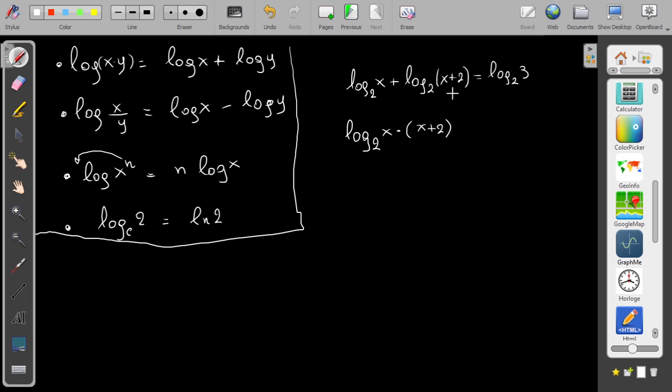x times (x+2) equals log₂3. So basically here now, I have log₂ equal with another log₂. Since these two are equal, then the function inside, which is here x times x, should be equal with this one. So basically x times (x+2) equals 3.